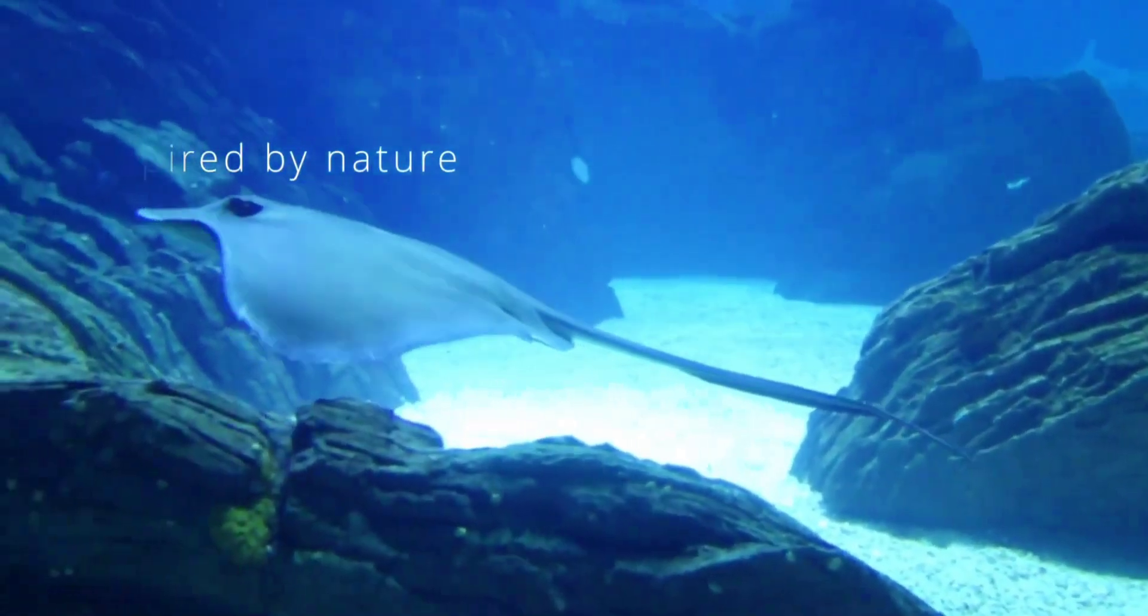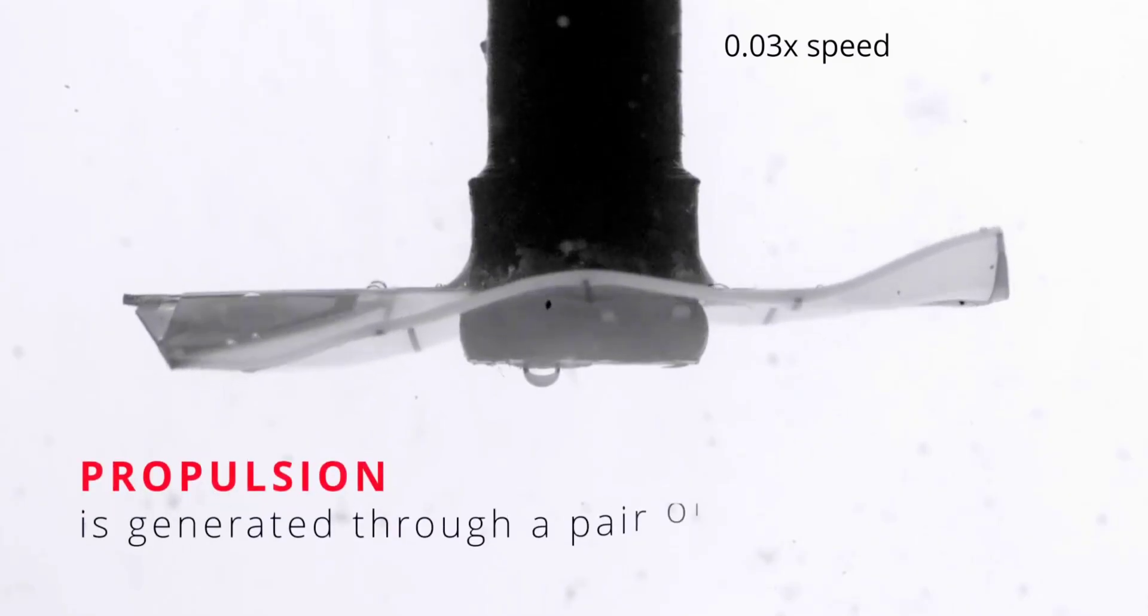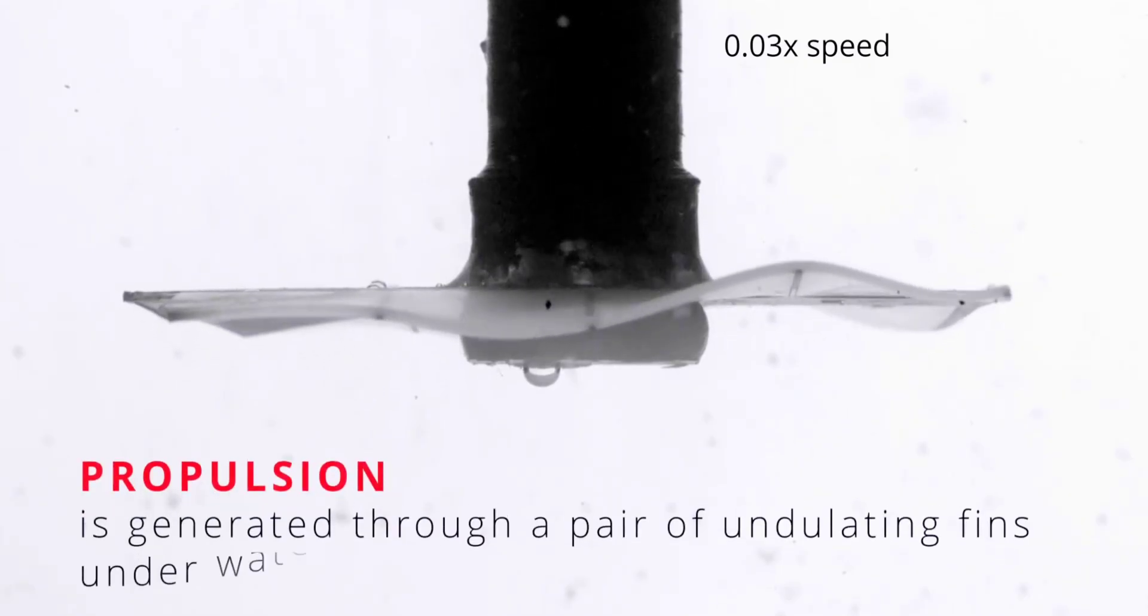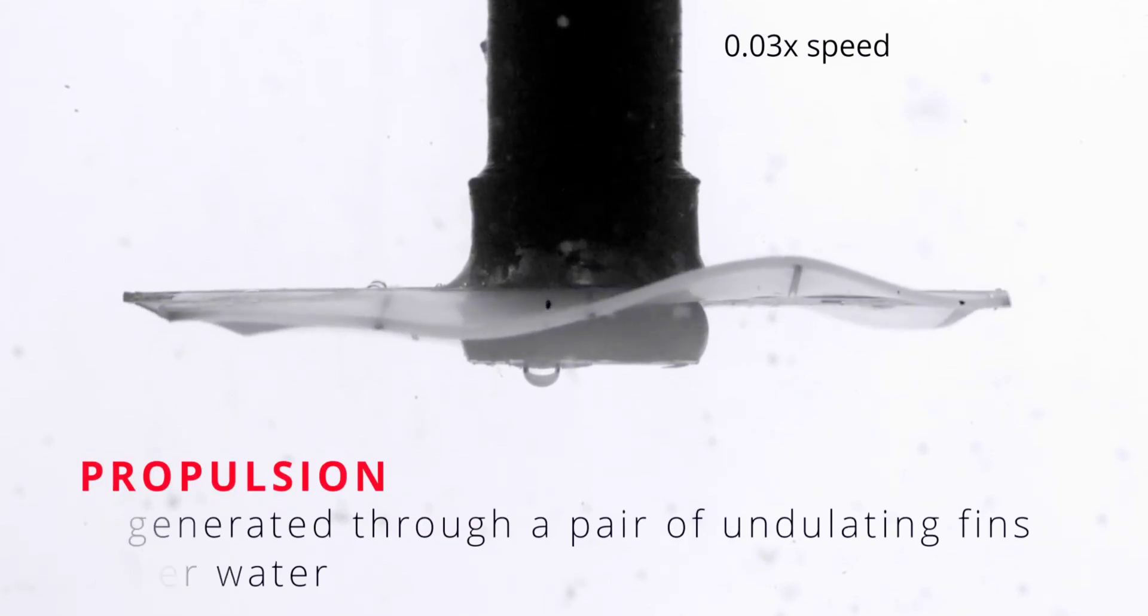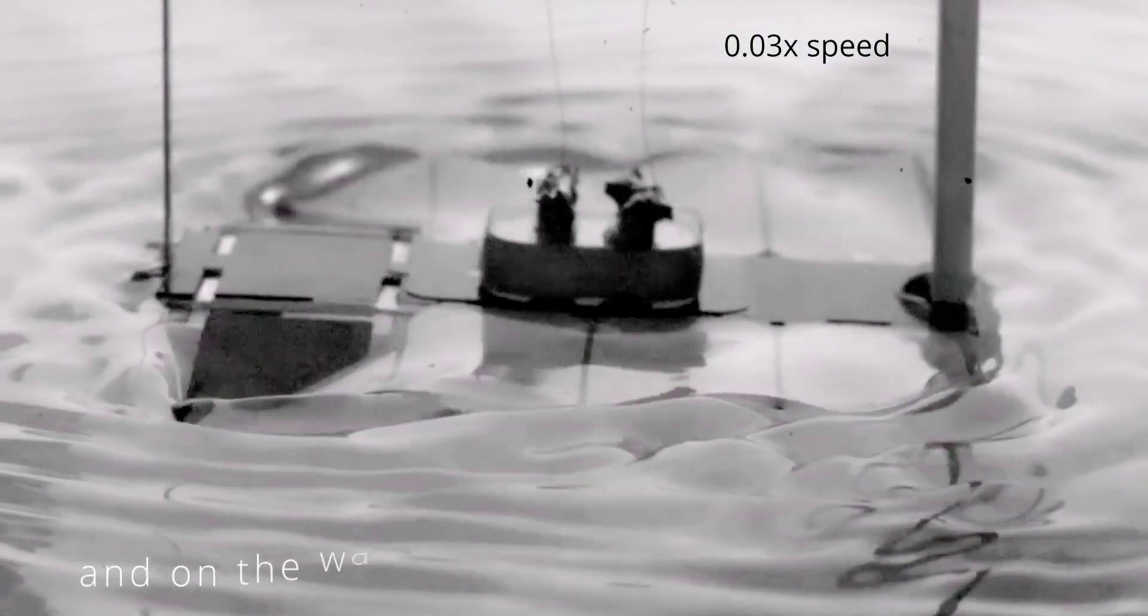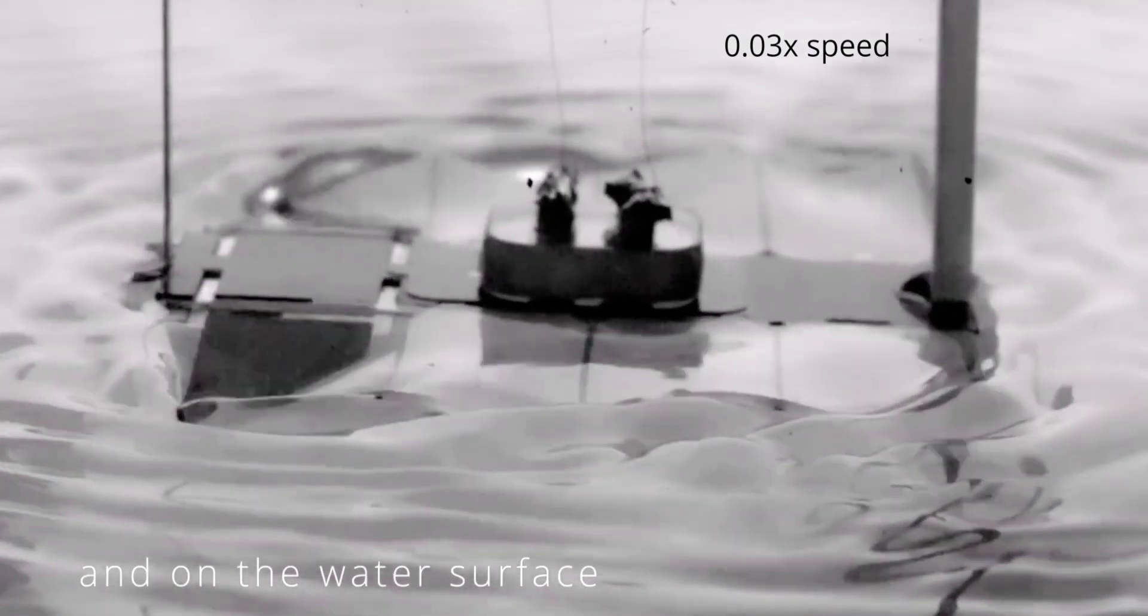Scientists at Switzerland's EPFL University have now copied that action in a tiny untethered robot that can move in any direction across the water's surface. The battery-powered device weighs just six grams and measures 45 millimeters long by 55 millimeters wide.